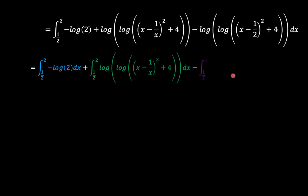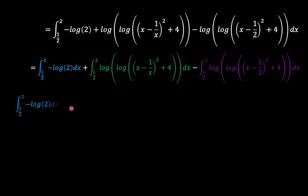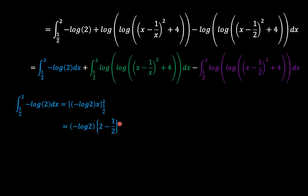We can now separate into three integrals: the blue, the green, and the purple. The blue is just the integral of a constant, negative natural logarithm of two, which evaluates to negative natural logarithm of two times x with the limits applied. This gives negative log two times two minus one half, which equals negative log two times three over two. So the answer of the blue integral is negative three over two times log two.